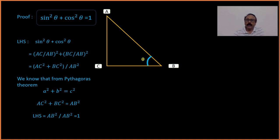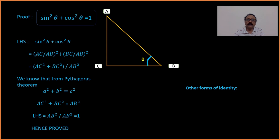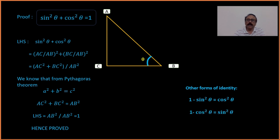We have taken any arbitrary value of theta — we did not consider a specific value — so it is an identity. Now let's see the other forms of the same identity. From sin²θ + cos²θ = 1, we can write: 1 − cos²θ = sin²θ, or 1 − sin²θ = cos²θ. These are the two other forms of this identity.